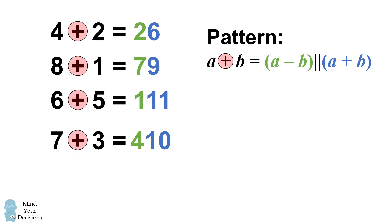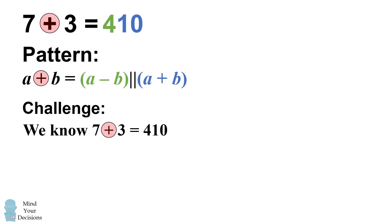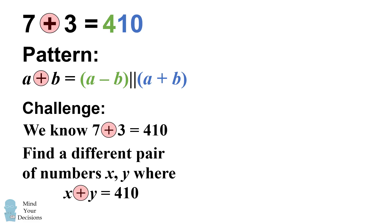So now let's go to the challenge problem. We figured out that 7 and 3 combine to be 410. We now want to find a different pair of numbers x and y that also combine to be 410.